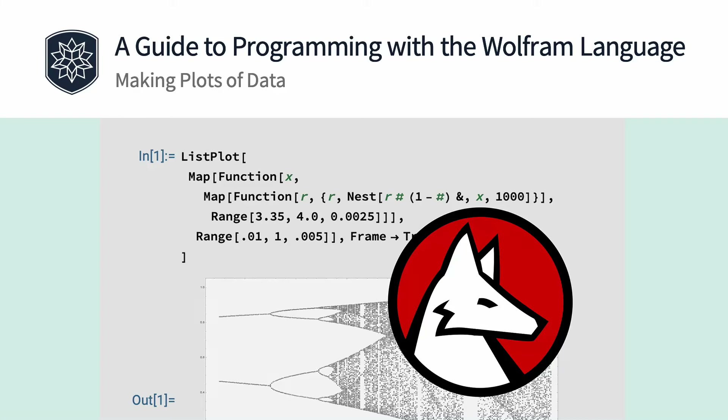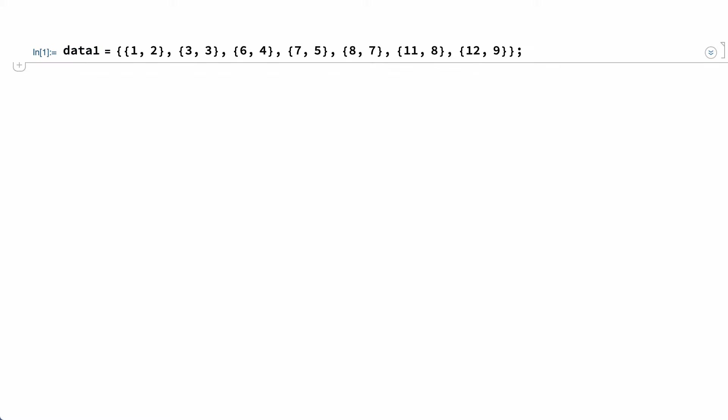There are lots of ways to plot data, and the best type of plot is often suggested by the nature of the data and by how the plot will be used. For example, this input shows data consisting of a list of points in two dimensions.